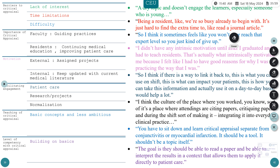Each theme should be backed up by data — direct quotations. For example, for 'building on the basics,' the goal is that physicians should be able to read a paper, interpret the results in context, and apply it directly to patient care. To validate the study, you go back to each participant and show them the data derived from their interview, asking if it reflects what they actually meant — this is member checking. You also give transcripts and themes to an independent expert in social science, who was not part of the study, to confirm the analysis was done well — this is triangulation.